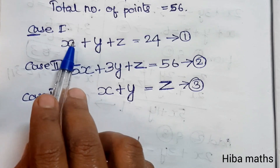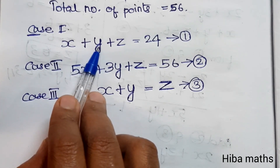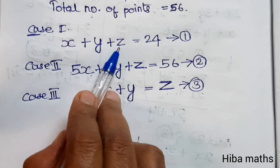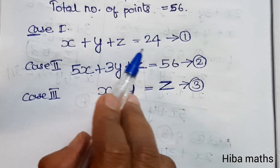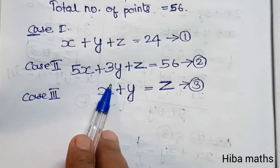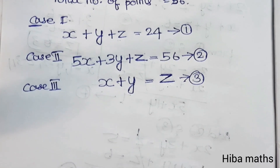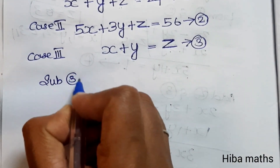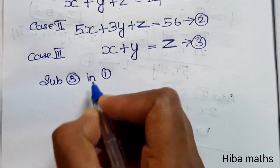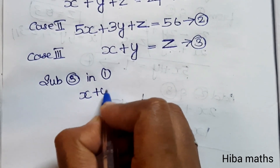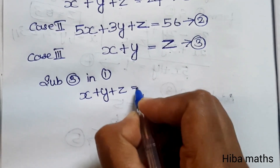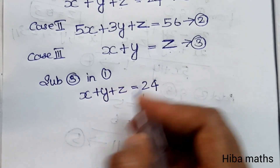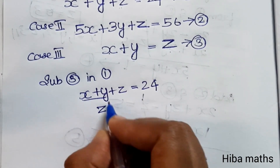From the first equation, x plus y plus z equals 24. Using the third equation where x plus y equals z, we substitute into the first equation to find the value of z using the elimination method.